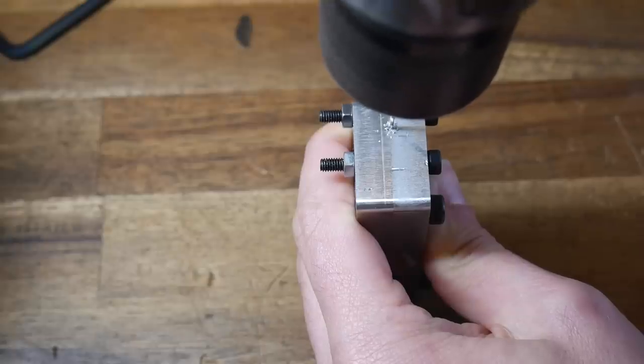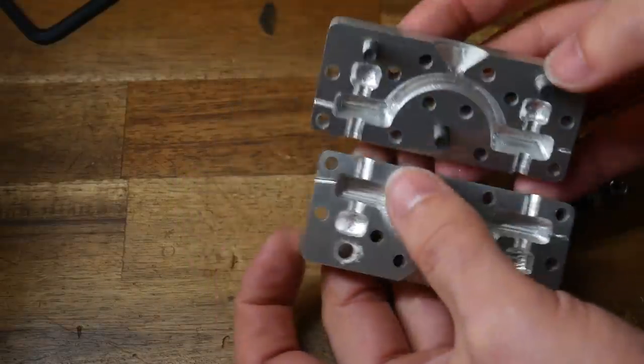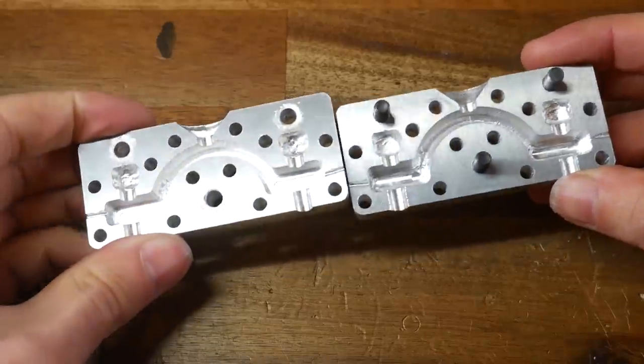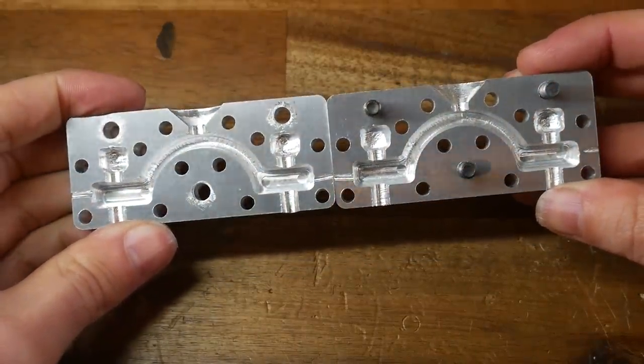You might remember our air escape holes on the side of the mould. Well, thanks to my CAM error, they're non-existent, so I needed to drill them manually. I should have used a drill press for this. The end result is they're slightly crooked, but they'll still function as they need to. And for now, that concludes our CNC aluminium mould.